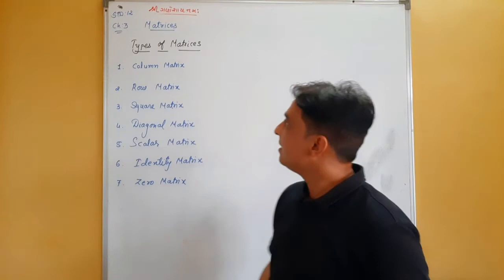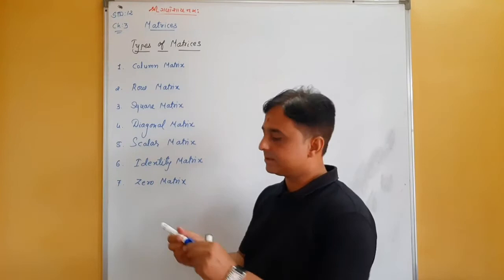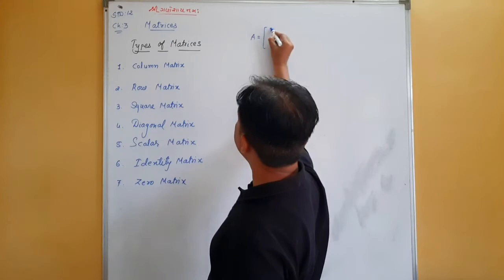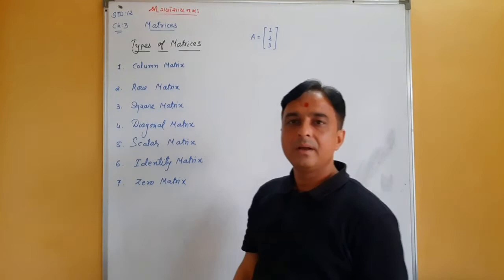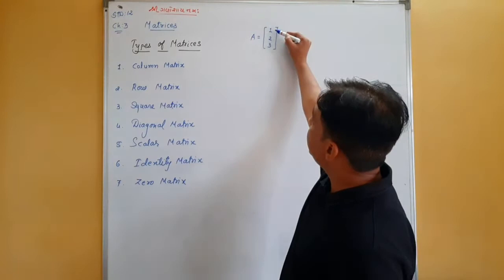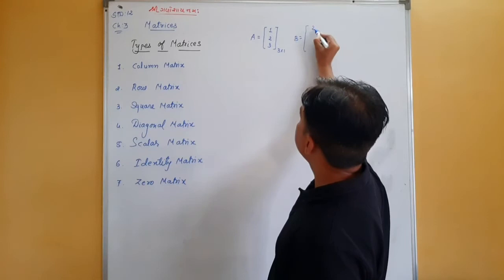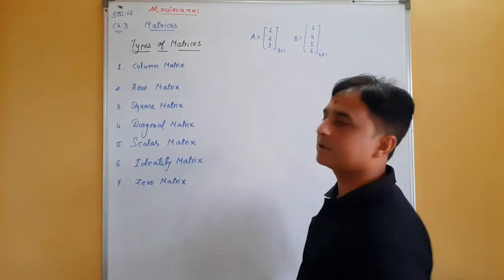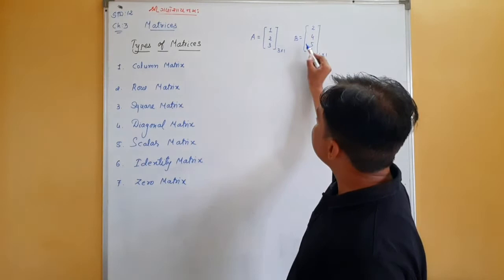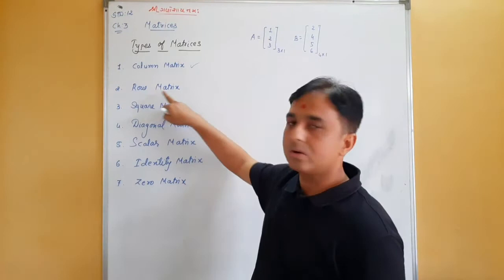Now let's see the types of matrix. The first type is the column matrix — it has only one column. There is no restriction on the number of rows. For example, a matrix with 3 rows and 1 column is a 3×1 column matrix. Similarly, matrix B = [2; 4; 5; 6] is a 4×1 matrix — four rows, one column. This type of matrix is known as a column matrix.